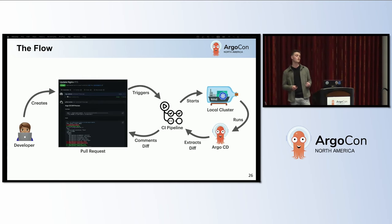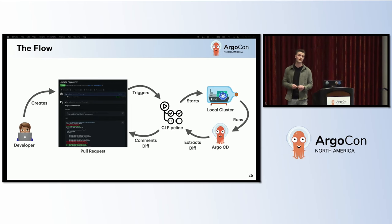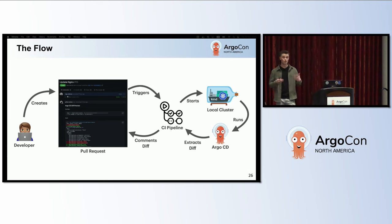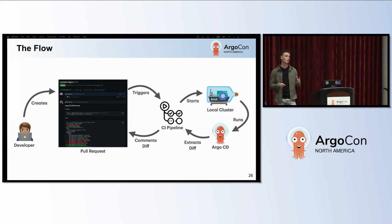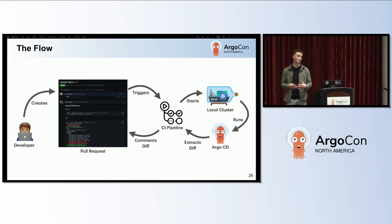The flow I want you to imagine is that some developer opens up a pull request where they make a few changes to a Helm chart or a Kustomize template. This triggers a pipeline. Inside the pipeline, we start by installing a local Kubernetes cluster that is only accessible inside the pipeline. Then we install Argo CD on top of it and apply all our applications. This means we can extract out the rendered manifests for each of the main branch and the pull request branch, do a git diff, compare the result, and highlight it on the pull request.